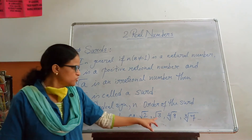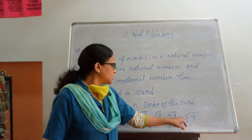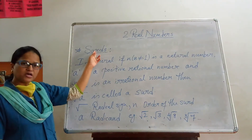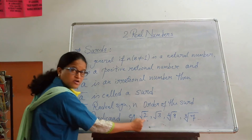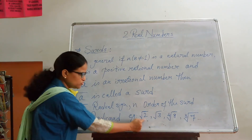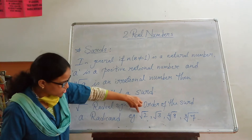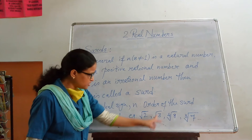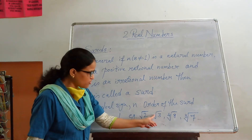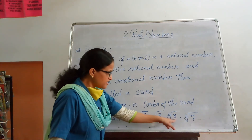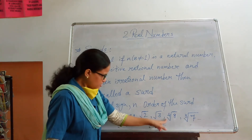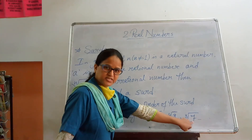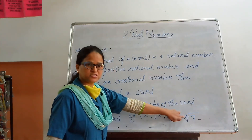For example: root 2, root 3, 4th root of 8, cube root of 7 — they are all examples of surds. Here 2 is the radicand and the order of the surd is 2. Similarly, 3 is the radicand with order 2. For the 4th root of 8, the radicand is 8 and the order is 4. For the cube root, the order of the surd is 3.